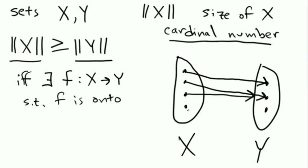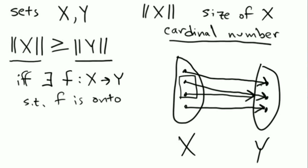It helps to draw a picture for intuition. I draw points from X and points in Y. Because I have a function from X to Y, I can draw an arrow from every point in X to some point in Y. Some arrows may point to the same point in Y, but every point in Y is hit by some point in X. You could sort of choose one of these arrows backwards to go from Y into X, so Y could fit into X. That's the intuition: Y is maybe the same size but definitely not bigger than X.